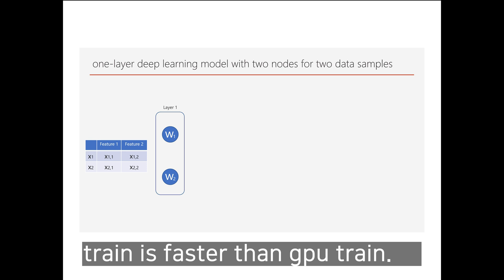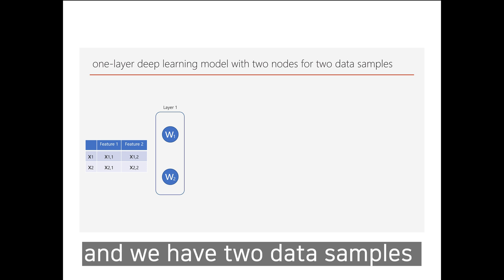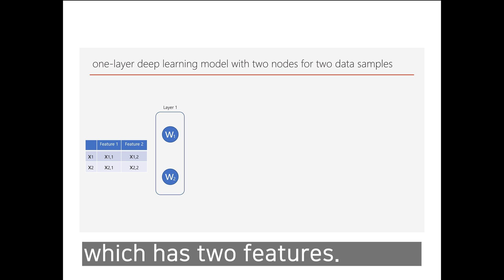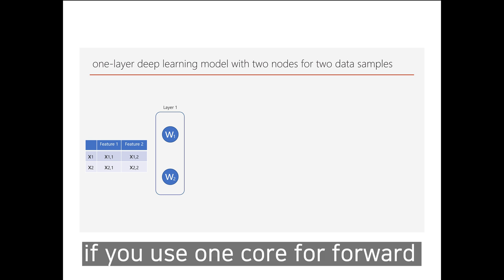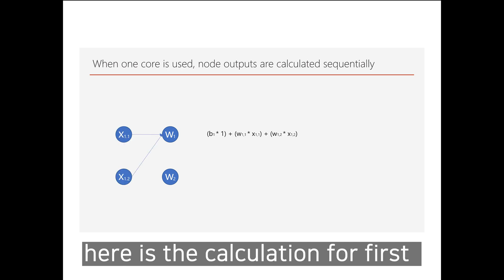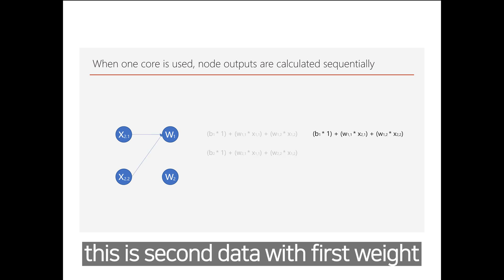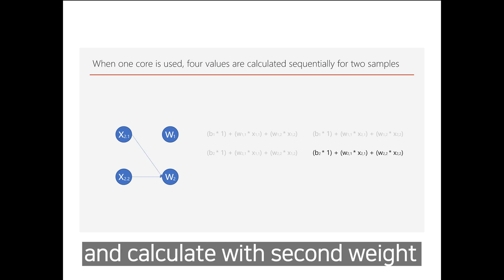Here is one example when CPU training is faster than GPU. You can see there is one layer with two weights and we have two data samples, each with two features. If you use just one core for forward propagation, there will be four calculations — the calculation with the first data for the first weight, and the calculation with the first data for the second weight.